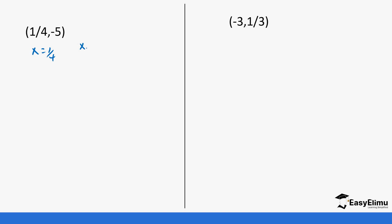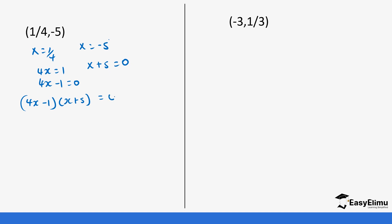Let's do more questions. So we have x equals one quarter and x equals negative five. This is going to be 4x equals one and x plus five equals zero. So this is 4x minus one equals zero. We put these two factors together: (4x minus one) and (x plus five) equals zero.